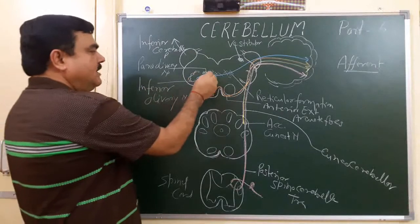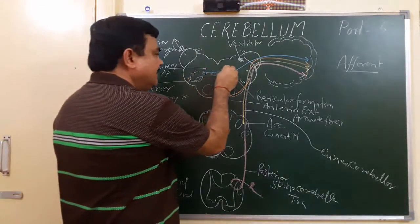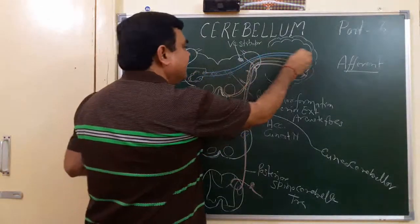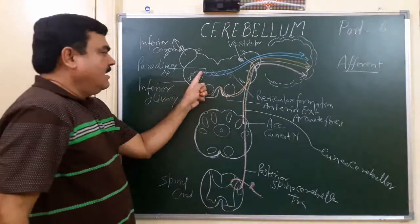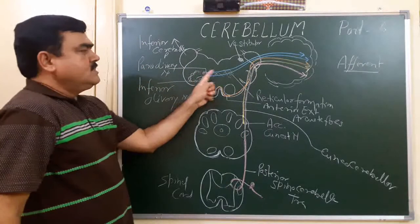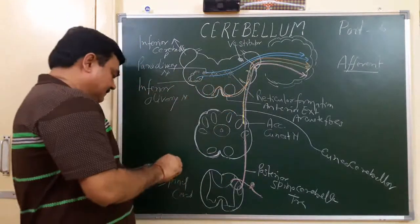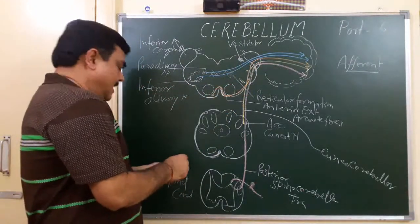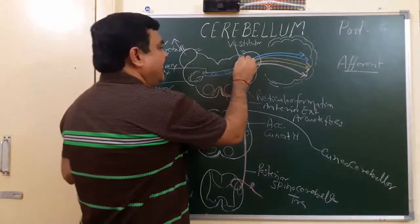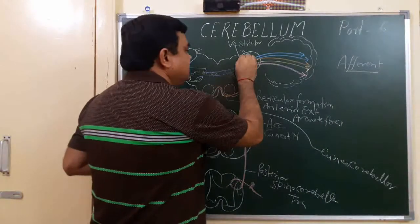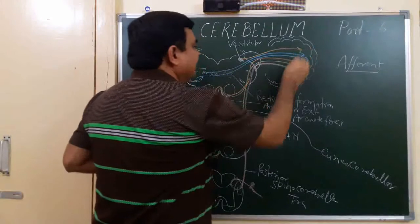Here is the paraolivary nucleus — these are paraolivary olivocerebral fibers. And here are the vestibular fibers — this is the vestibular nuclei, giving rise to vestibulocerebellar fibers.